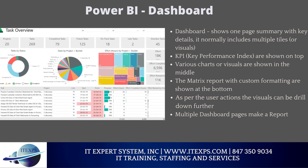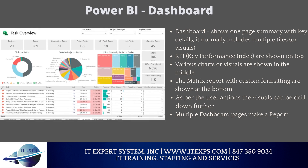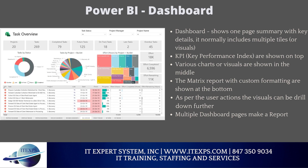A key feature of business intelligence tools is the ability to create dashboards. A dashboard shows a one-page summary with key details. It normally includes multiple tiles or visuals all in one location. It can show KPIs — Key Performance Indexes — typically on the top, with various charts or visuals in the middle, and matrix reports with custom formatting towards the bottom. You can also have multiple dashboard pages to make one comprehensive report.